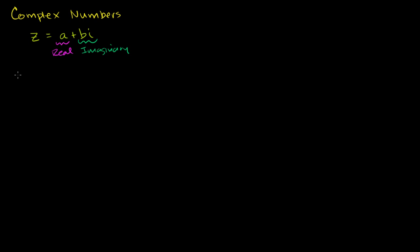Just so you're used to the notation, sometimes you'll see someone write the real part of z. This is a function that you input a complex number, and it'll output the real part. In this case, the real part is equal to a. And you could have another function called the imaginary part of z — you input some complex number, and it'll output the imaginary part, or how much you're scaling up i. In this case, it would be b.